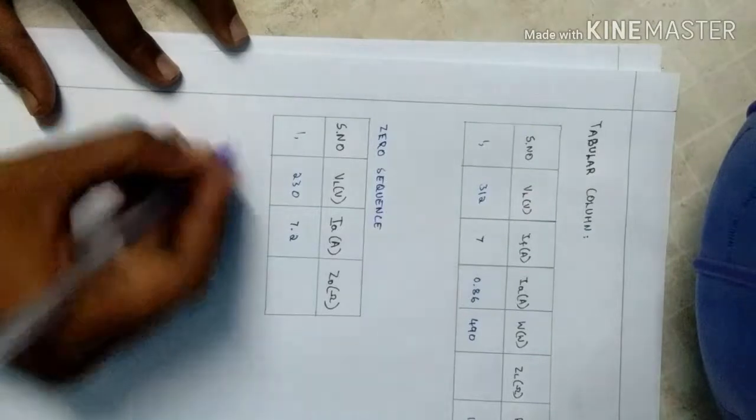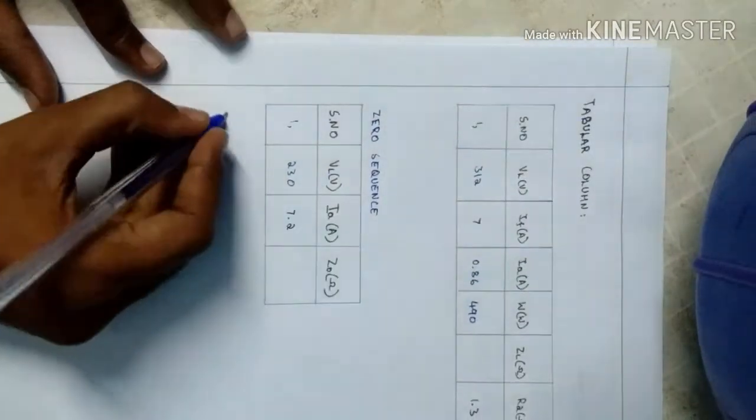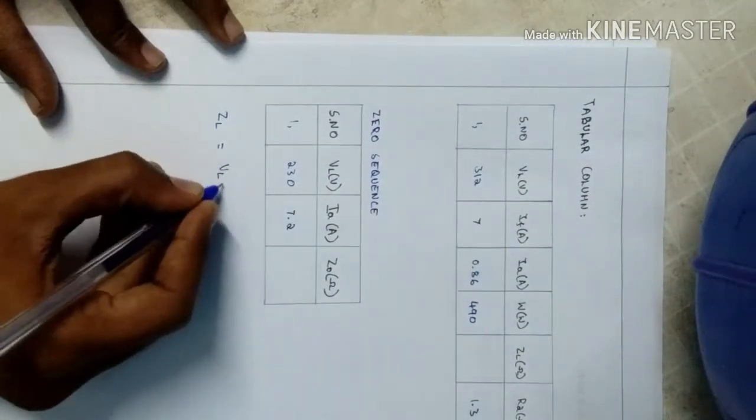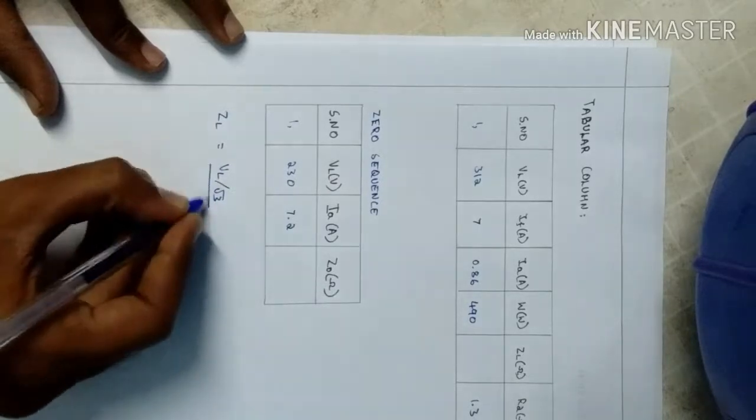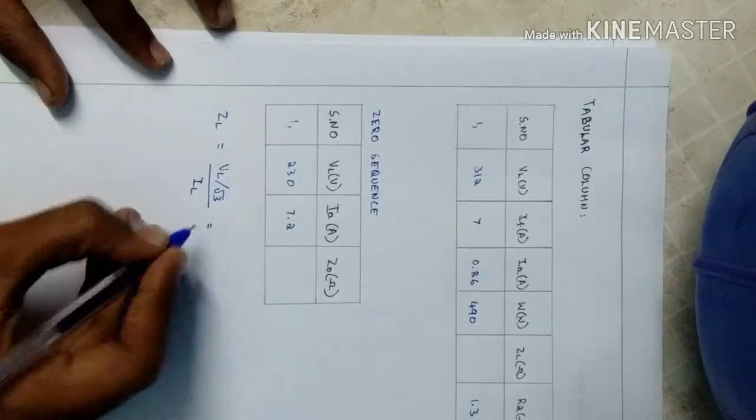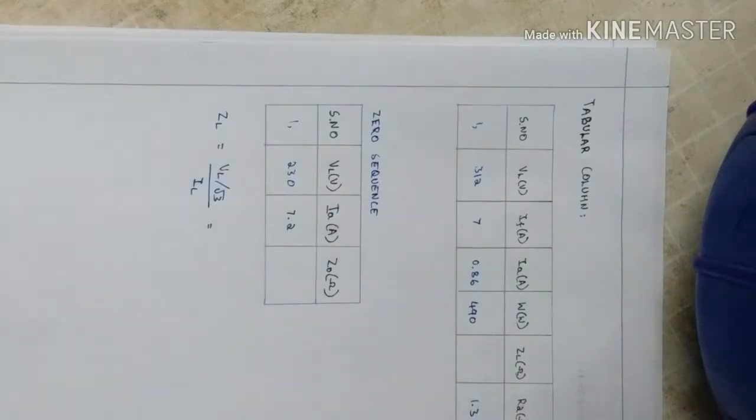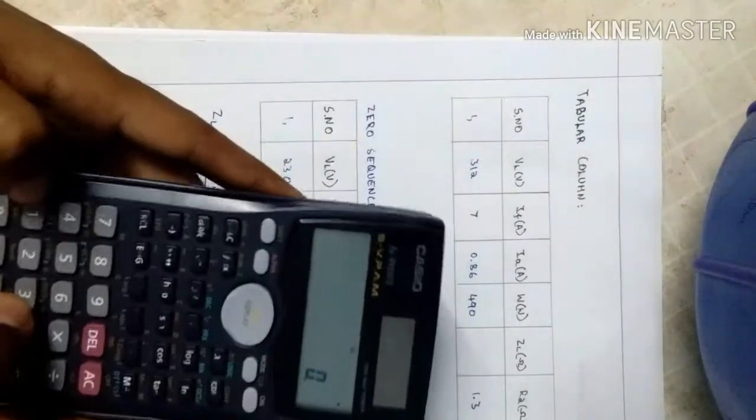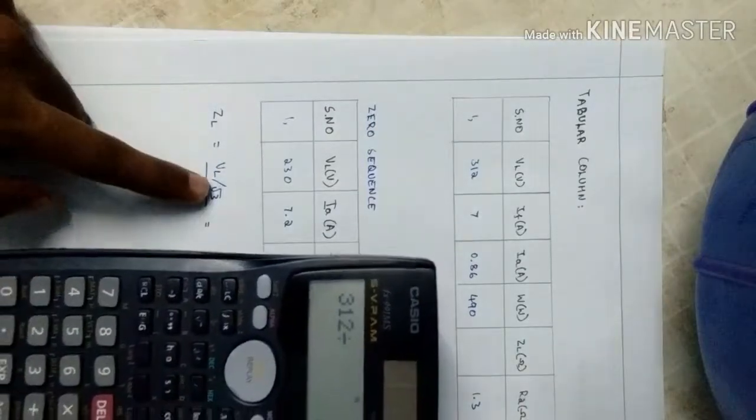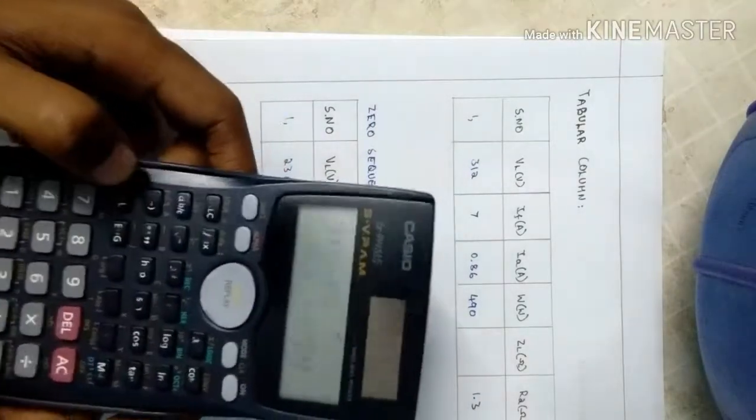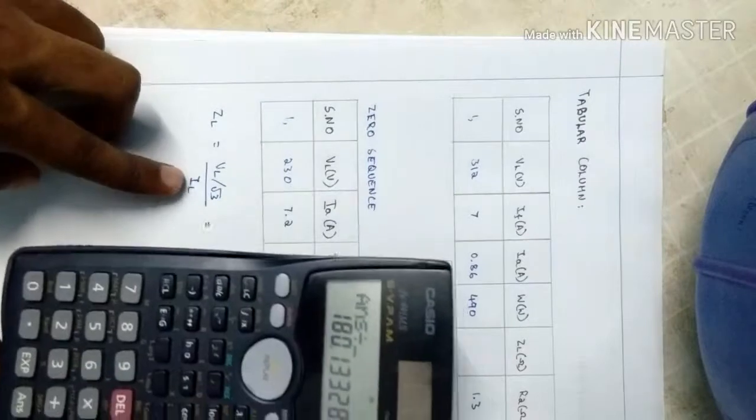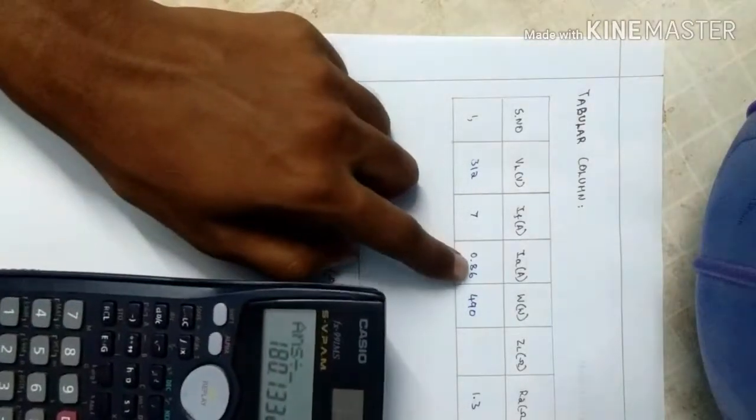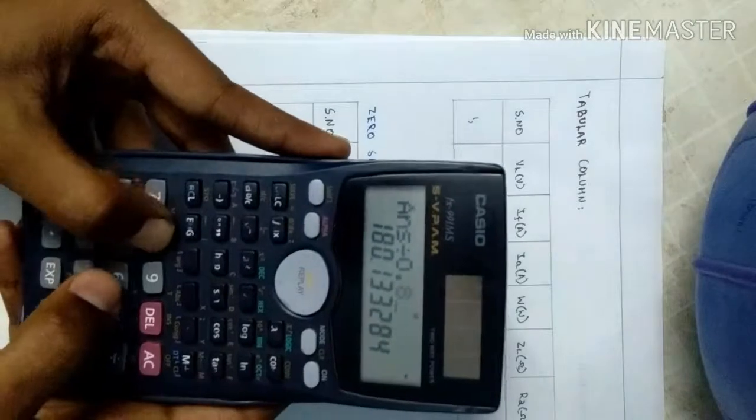Here is the calculation for ZL. ZL is equal to VL by root 3 by IL. Take your calculators, that is VL 312 divided by root 3, and then answer divided by IL that is IA 0.86. The answer will be 209.45 ohm.